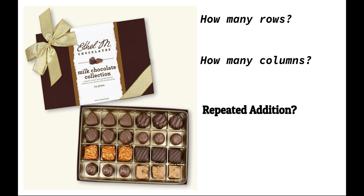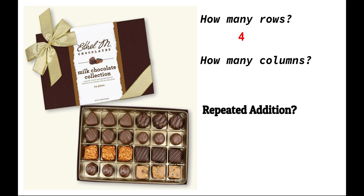Here's one we're going to do together. Let's count the rows of chocolates. There's one, two, three, four — there are four total rows. How many columns are there? See if you can count them quickly. Let's try together: one, two, three, four, five, six. There are six chocolates in each row — there are six columns.